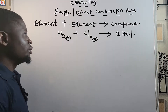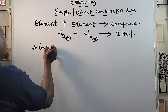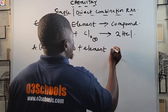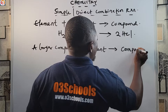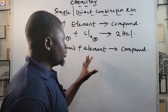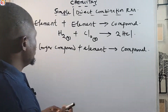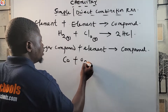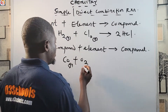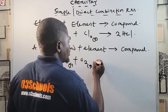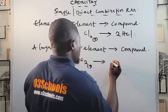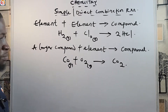A simple or direct combination reaction can also occur between a larger compound plus an element to give a compound. For example, CO — carbon monoxide gas — reacts with O₂ — oxygen gas — to form CO₂. You must check if the reaction is balanced, because writing unbalanced equations in chemistry is a serious error.